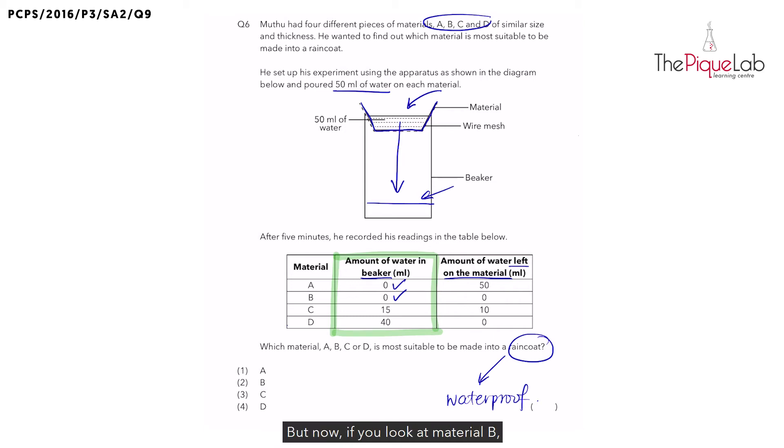But now, if you look at material B, there was actually 0ml of water left on the material. So where did all of these 50ml of water that was poured go? So in this case, students need to realize that 50ml of water that was poured was actually absorbed by the material itself. Therefore, is material B absorbent? Yes.